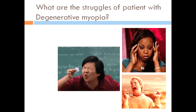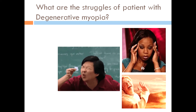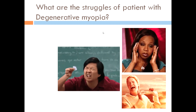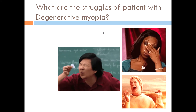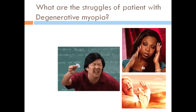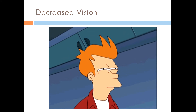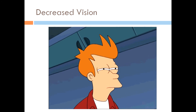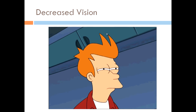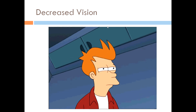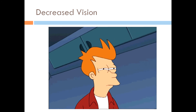So what are the struggles of patients with degenerative myopia? Like any eye disease or condition, patients with degenerative myopia experience signs and symptoms. First, there is a decrease in vision — particularly for far vision — because the ray of light is situated in front of the retina, causing near objects to be seen more clearly than distant ones.